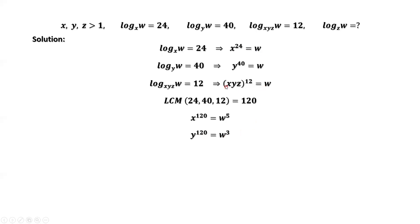From the last result, x times y times z to the power 12 equals w. We take power 10 on both sides, giving x times y times z to the power 120 equals w to the power 10.